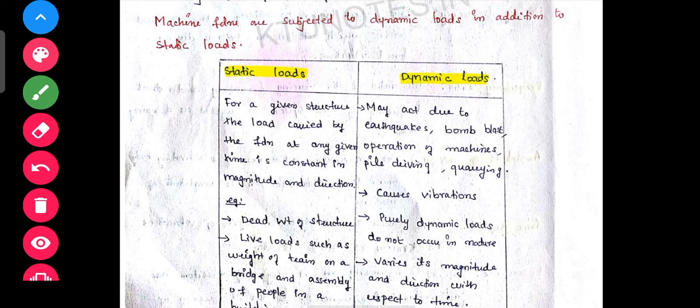Machine foundations are subjected to dynamic loads in addition to static loads. For a given structure, the load carried by the foundation at any given time may be constant — that is what we design for in normal foundations. Dynamic loads may act due to earthquakes, bomb blasts, operational machines, pile driving, quarrying, etc.